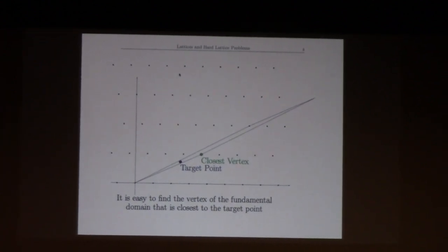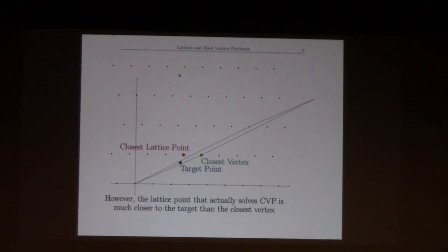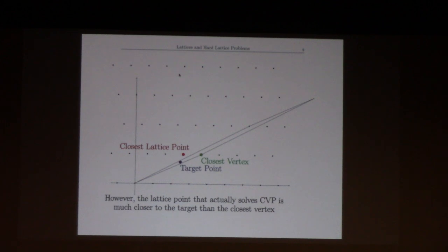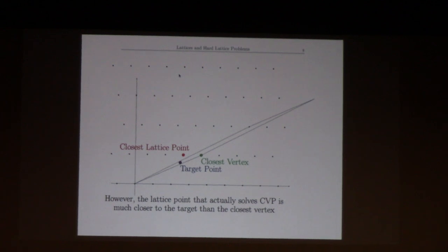Which is this one that just popped up, closest vertex. But you can see visually that's not the closest lattice point - that's the closest lattice point over here. So here we have an example of a problem, the closest vector problem, that might be easy to solve if you have a good basis but very hard to solve if you have a bad basis.